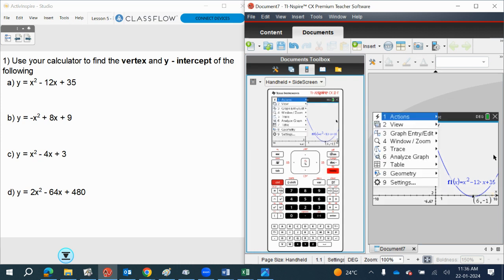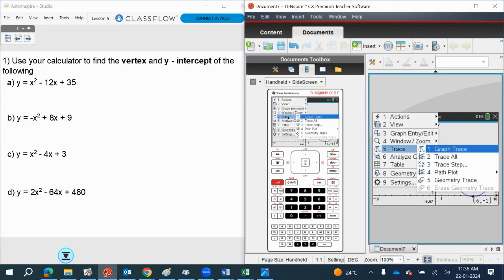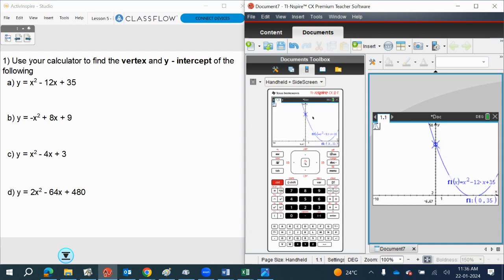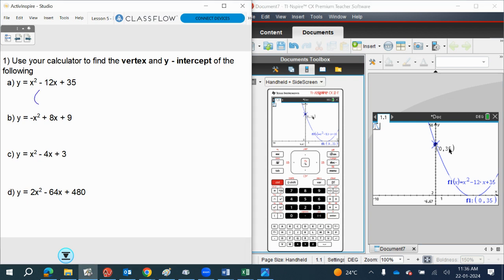To find the y-intercept, the best routine is to use trace, trace graph. It occurs when x equals 0, so type in 0, and it says x equals 0. Then press enter twice, and it will record that point. So we can see here the vertex should always be in a bracket. 0, 35, that's not right.